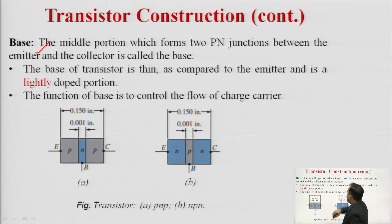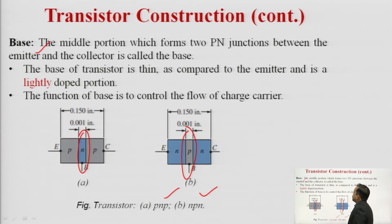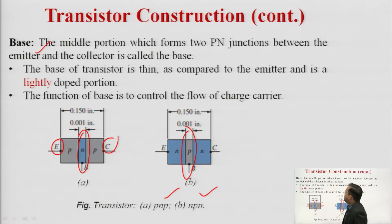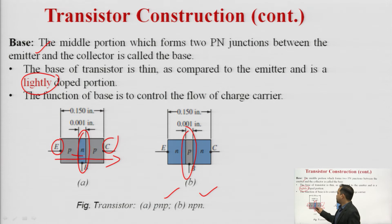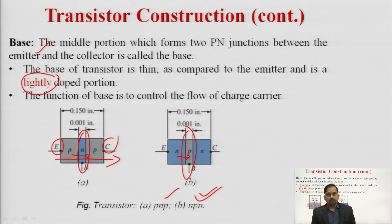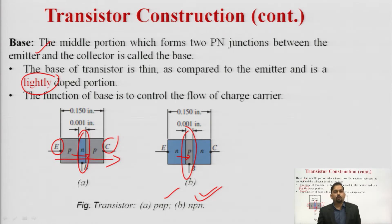The middle portion between the emitter and collector is the base region. The base is lightly doped because we want the majority of charge carriers to reach the collector from the emitter side. If the base were highly doped, there would be recombinations of holes and electrons in the base region. To minimize recombination and allow majority carriers to reach the collector, the base must be lightly doped. The function of the base is to control the flow of charge carriers.